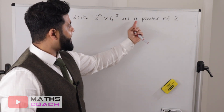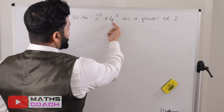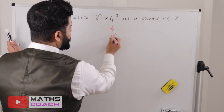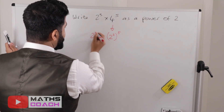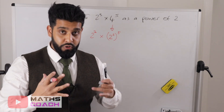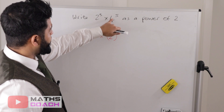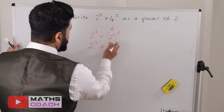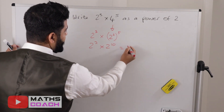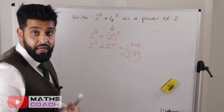Write 2 to the power of 3 times 4 to the power of 5 as a power of 2. The 2 to the power of 3 is already in a power of 2 — it's the 4 to the power of 5 we need to change. Since 4 is 2 squared, we replace 4 with 2 squared. Now applying the rule of multiplying the powers, 2 squared to the power of 5 becomes 2 to the power of 10. Then adding powers: 3 plus 10 gives 2 to the power of 13.